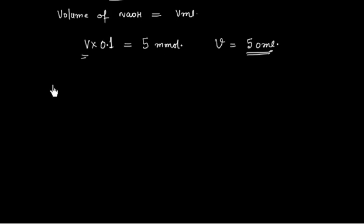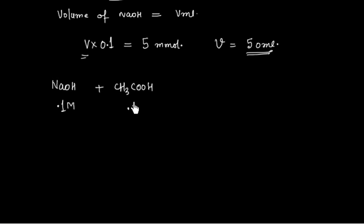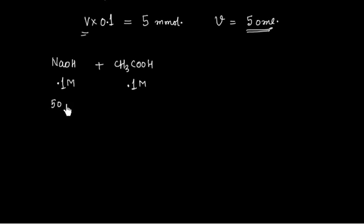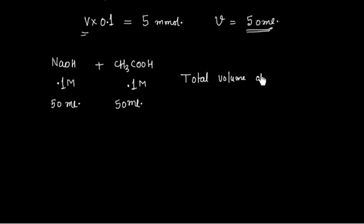So in the titration, NaOH is 0.1 M and acetic acid is 0.1 M. The volume of NaOH required is 50 mL and the volume of acetic acid is also 50 mL. Therefore, the total volume of solution is 50 mL + 50 mL = 100 mL.